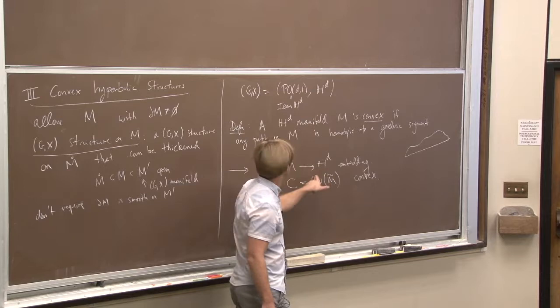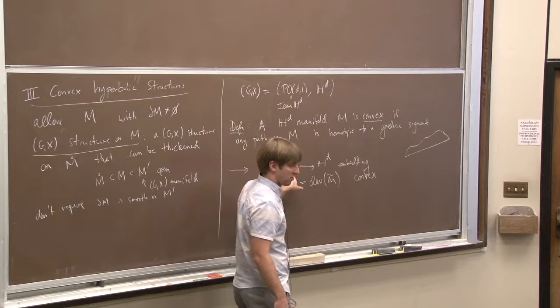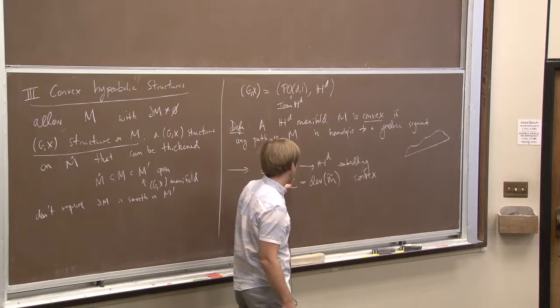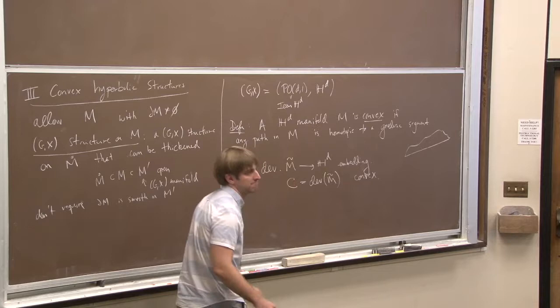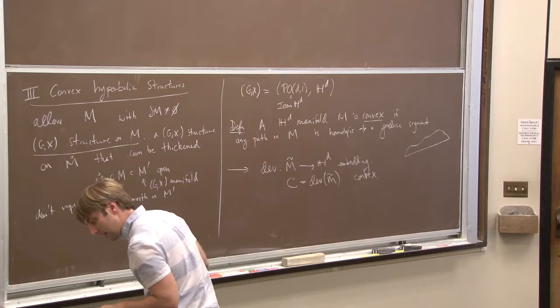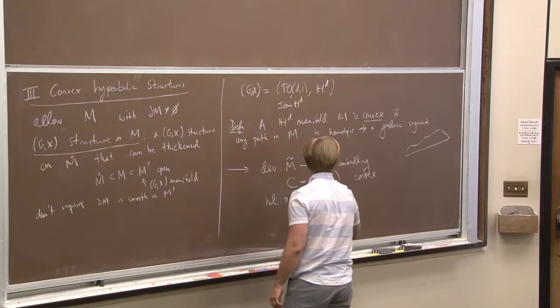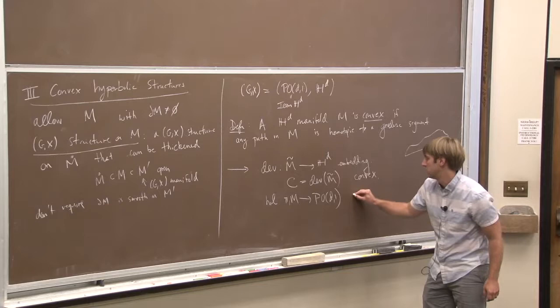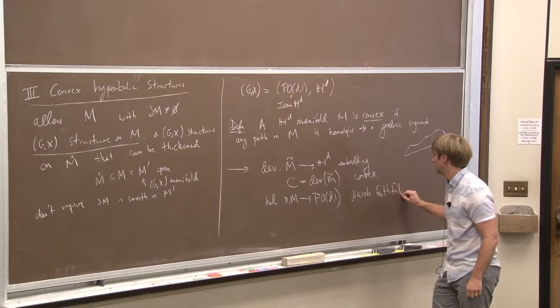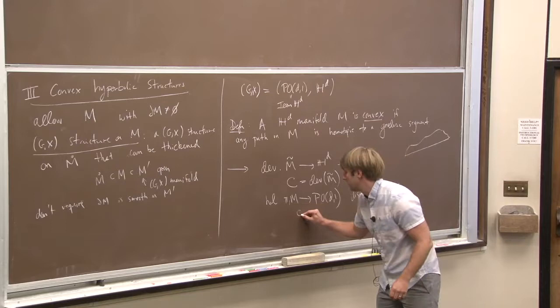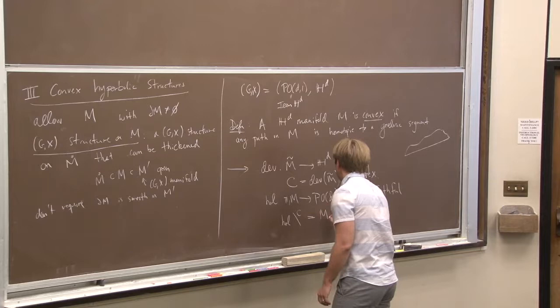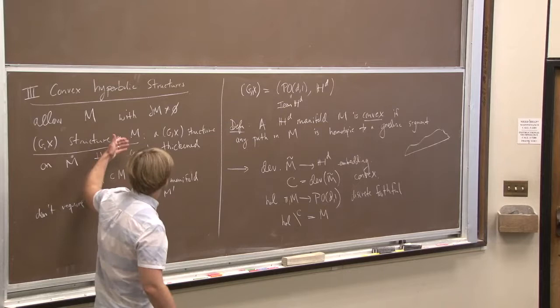Why is it injective? I have two points here. I want to see if they go to different points here. I draw a path between them. If these are genuinely different points, that path is not homotopic to the trivial path. So it can be straightened, and that straight line develops to a straight line here. And straight lines never come back and cross themselves. Since the developing map is an embedding, the holonomy representation, as with complete structures, is also discrete and faithful. It acts properly discontinuously on C. In fact, C mod holonomy is naturally exactly the hyperbolic manifold.